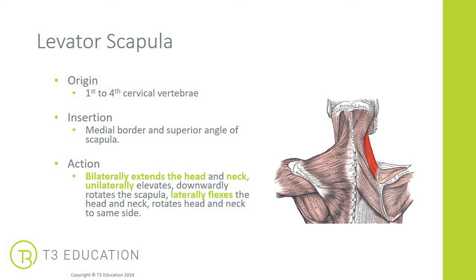The next muscle is the levator scapula. It originates on the first to fourth cervical vertebrae, going deeper behind the trapezius, and inserts into the medial border and superior angle of the scapula — the top corner. These muscles are deeper to the trapezius. Bilaterally it extends the head and neck; unilaterally it can laterally flex the head and neck, but it also elevates and downwardly rotates the scapula, and rotates the head and neck to the same side — which differs from the trapezius, which rotates to the opposite side.